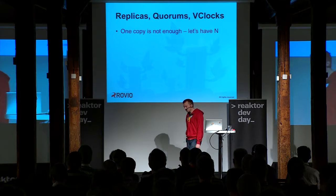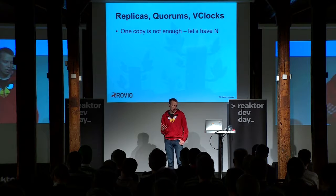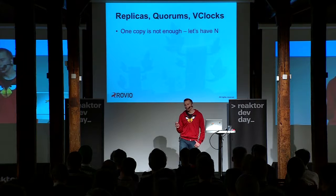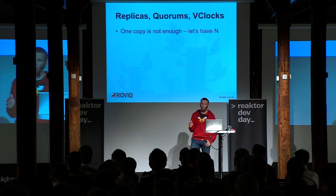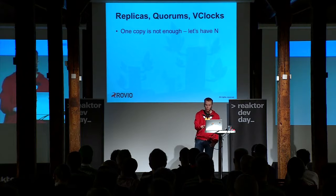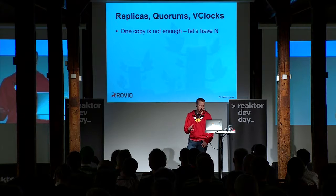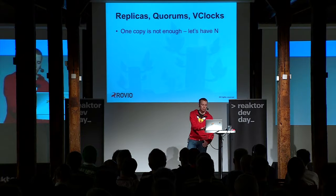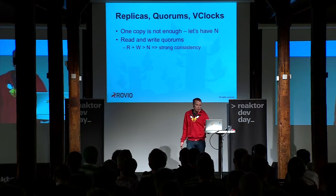Riak gives us copies. I want to have N copies of my data, and N is the key here — it's not the size of the cluster. For example, we have ten nodes in the cluster and N is three, so I have three copies at all times. That makes sure my data is safe and always available even if some nodes are down. We can define what N is and how fault tolerant the system will be.